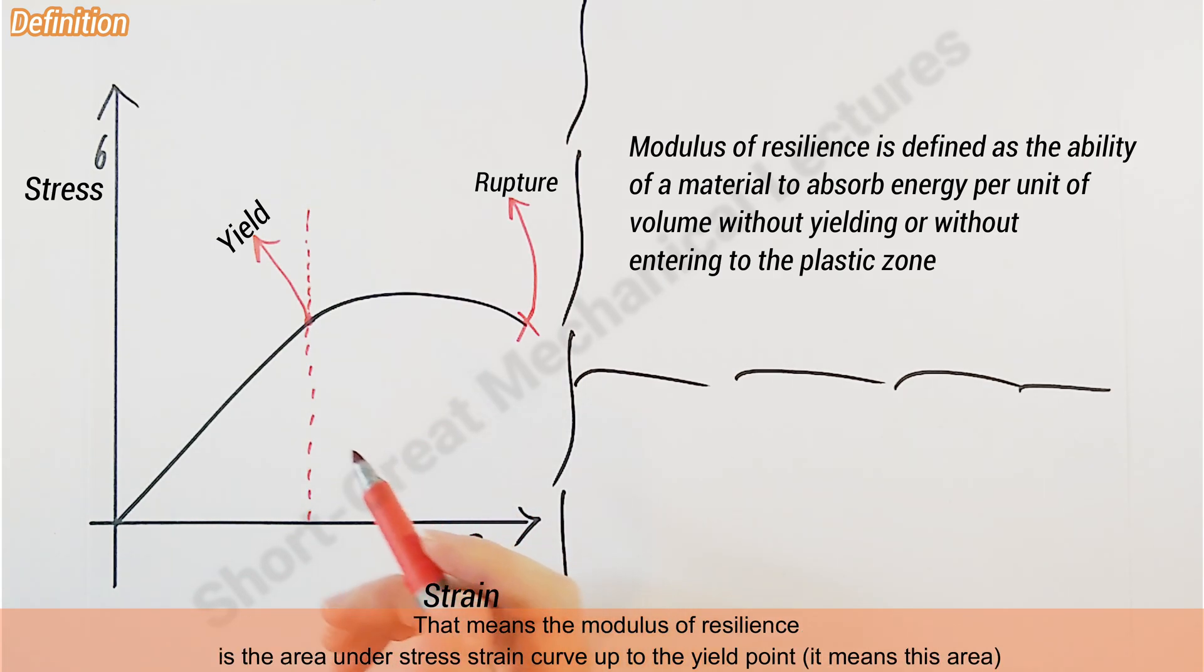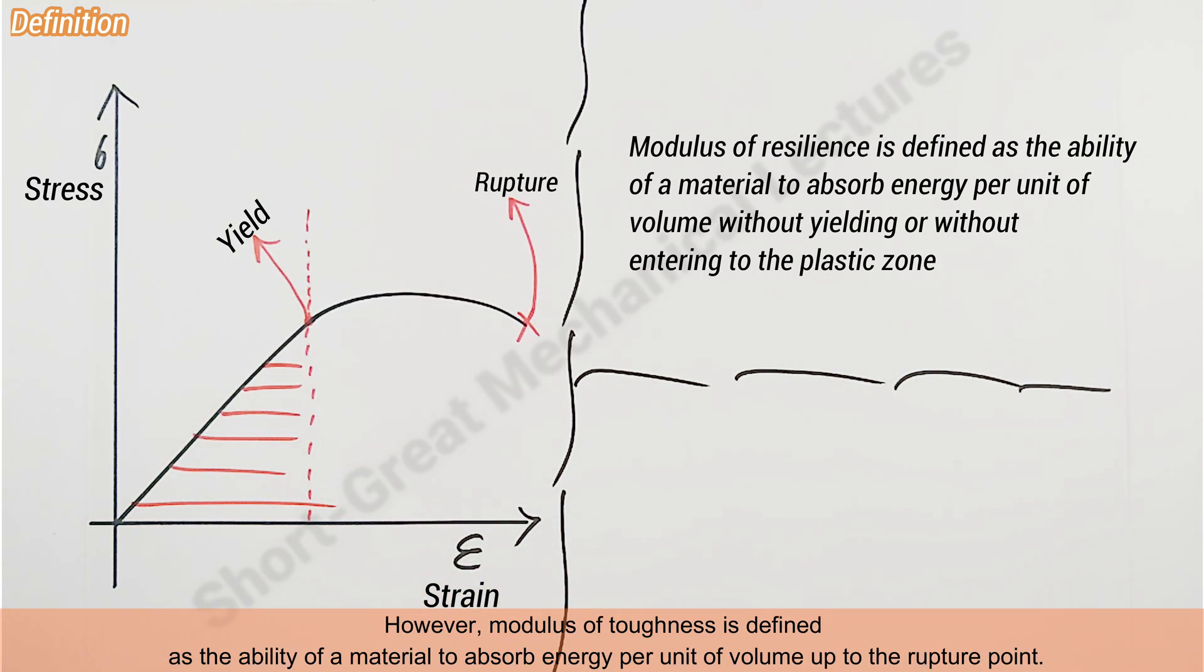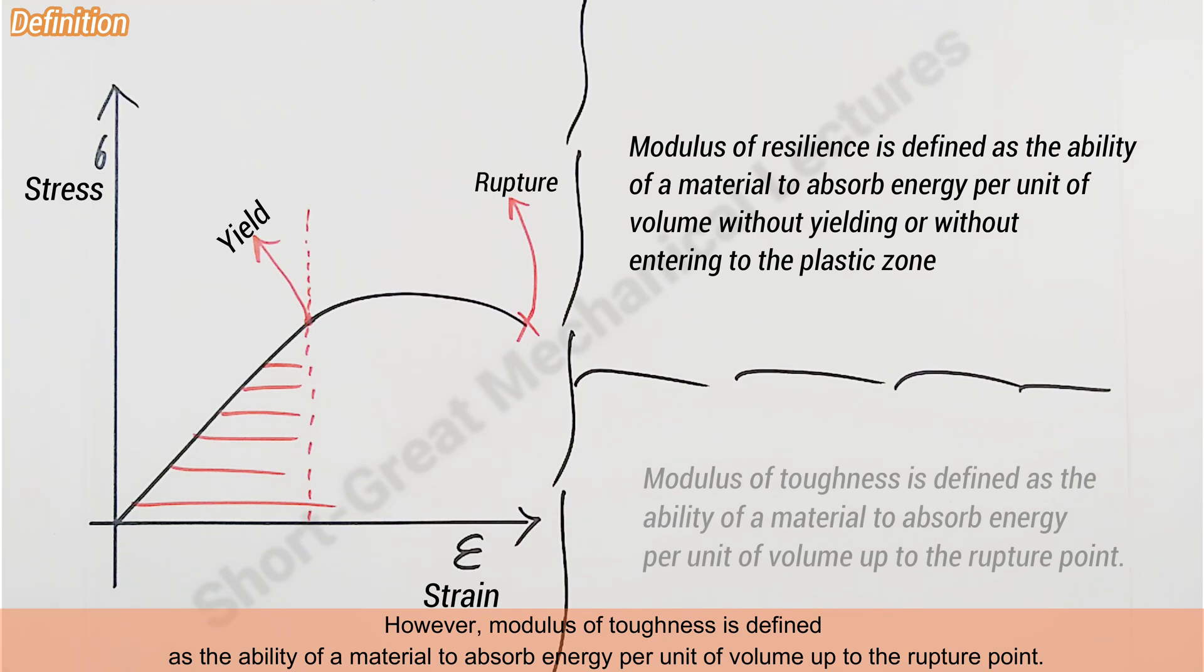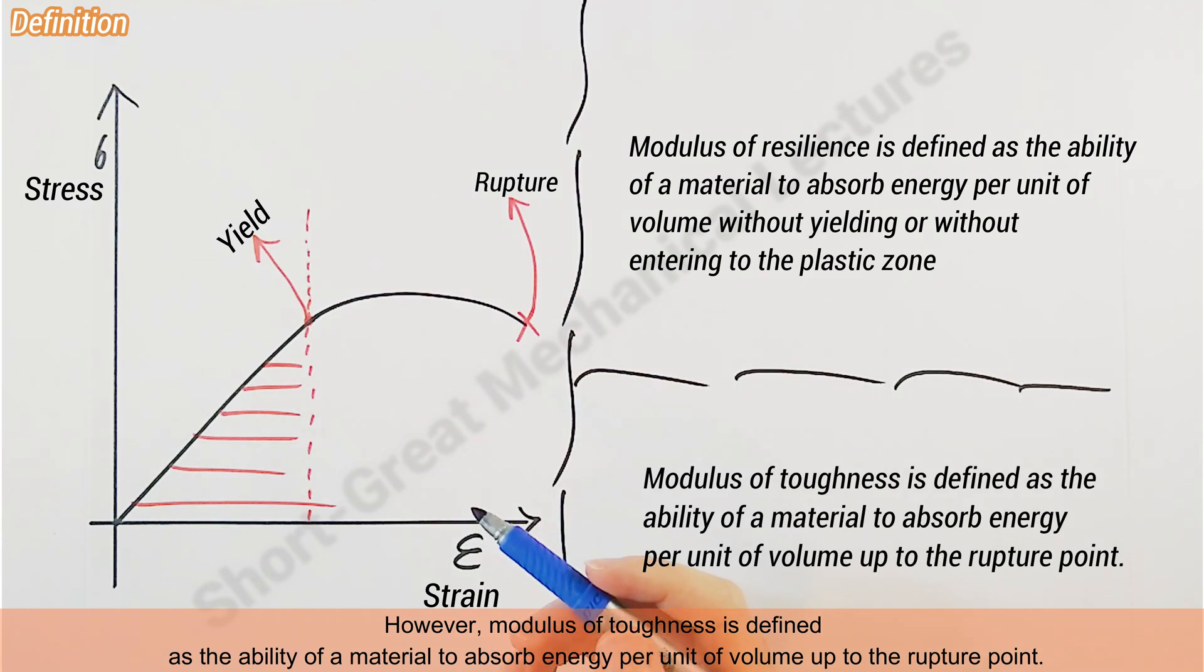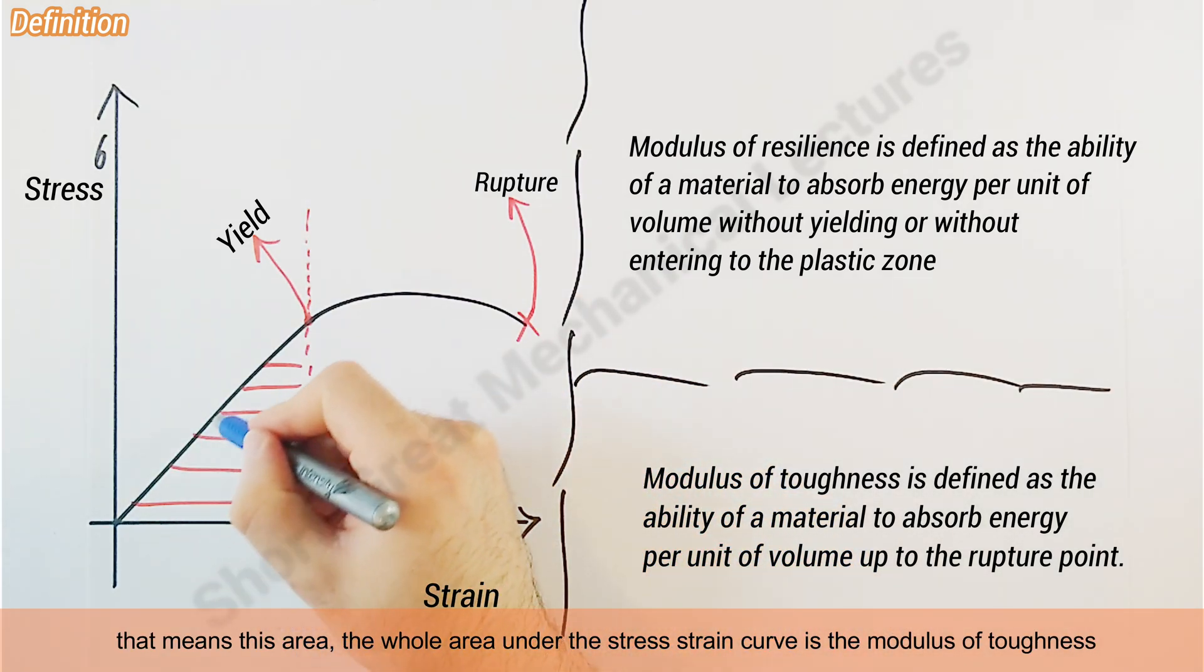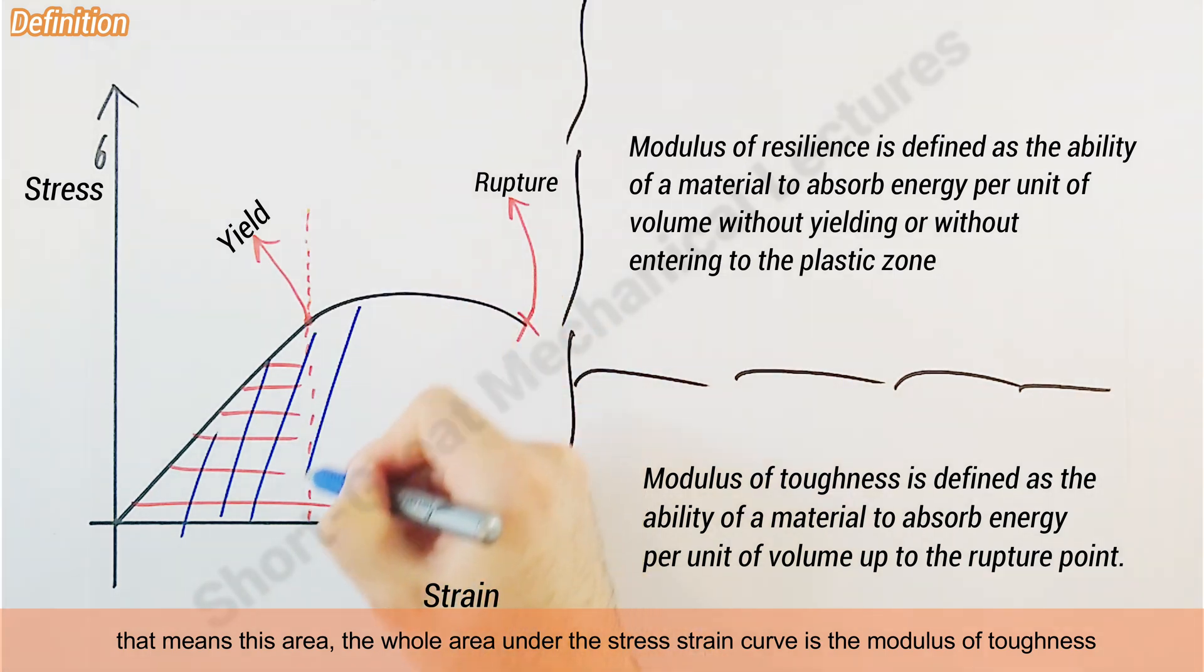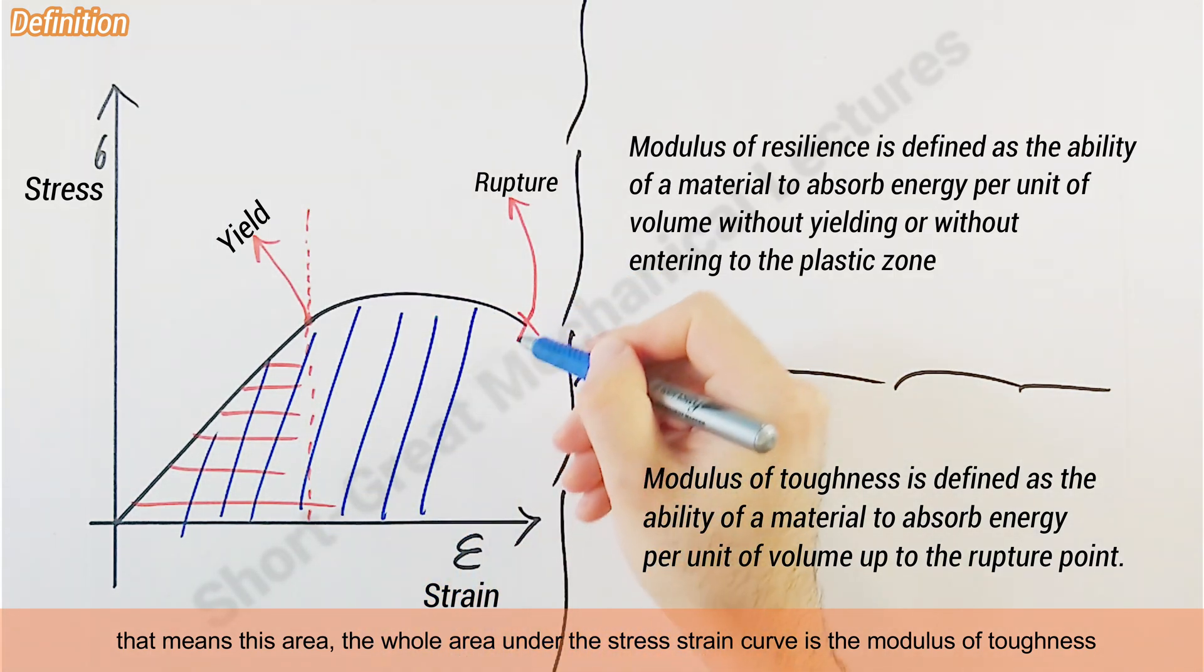However, modulus of toughness is defined as the ability of a material to absorb energy per unit of volume up to the rupture point. That means this area—the whole area under the stress-strain curve—is the modulus of toughness.